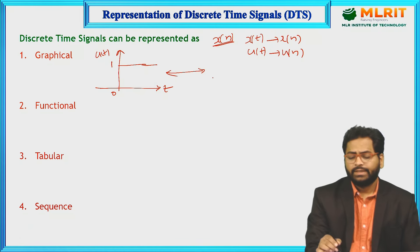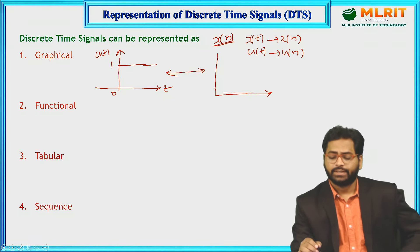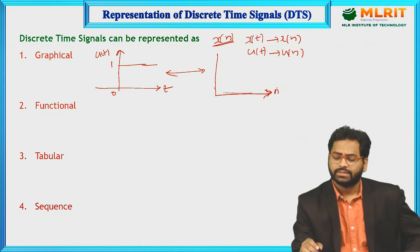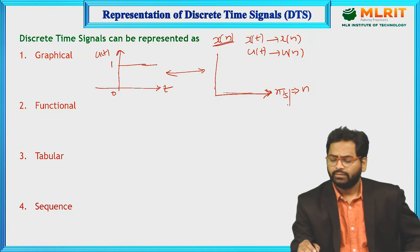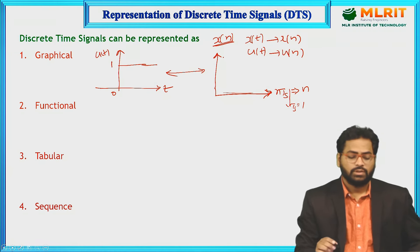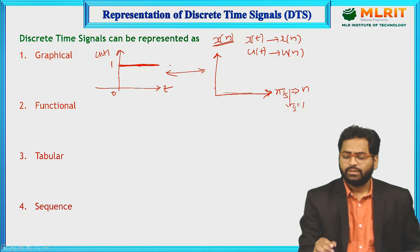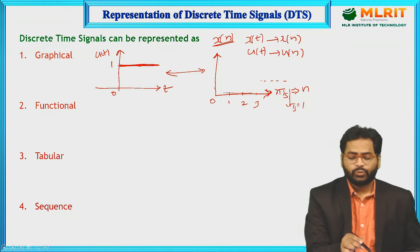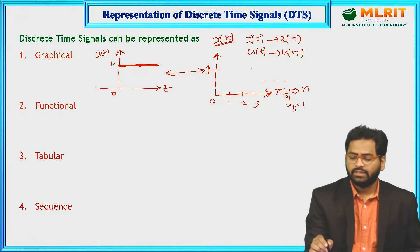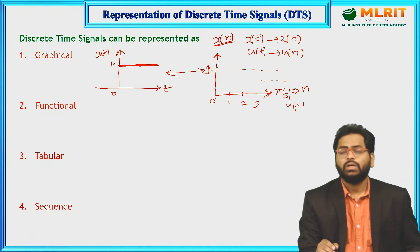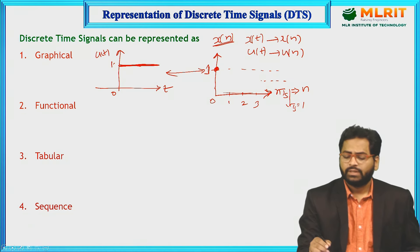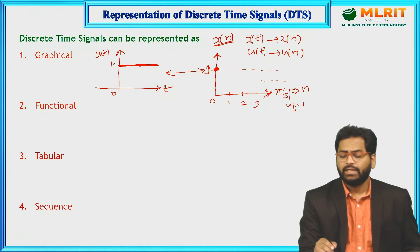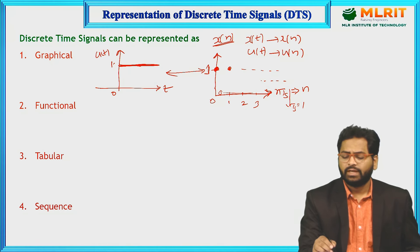Now I need to get the signal in discrete domain, taking integer values n = 0, 1, 2, 3 and so on. The amplitude is fixed at 1. At n = 0 the switch is closed, so I get that point. At the remaining time the switch is open, so the amplitude is 0. At n = 1 the amplitude is 1, at n = 2 the amplitude is 1, at n = 3 the amplitude is 1, and so on up to infinity.